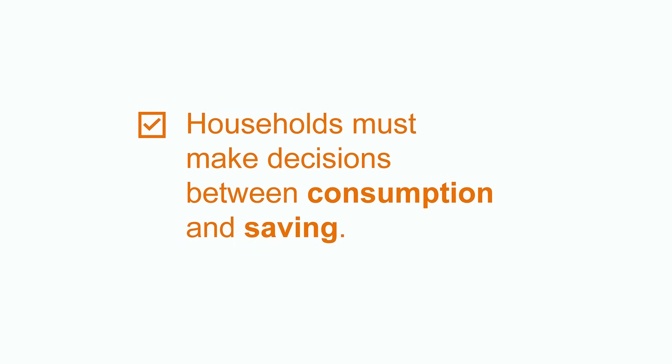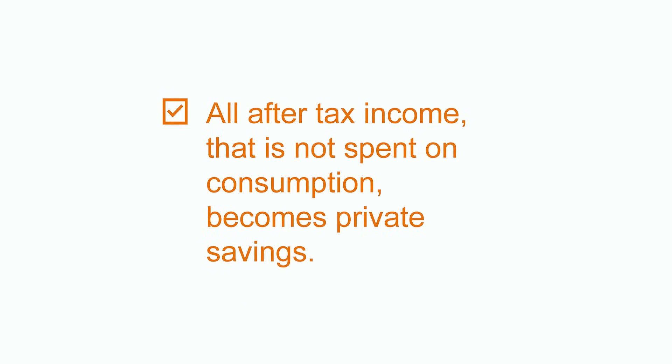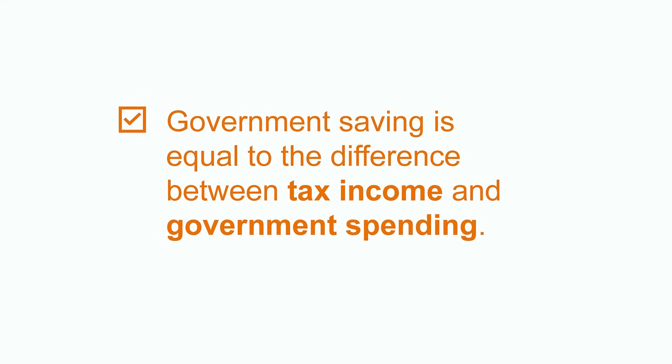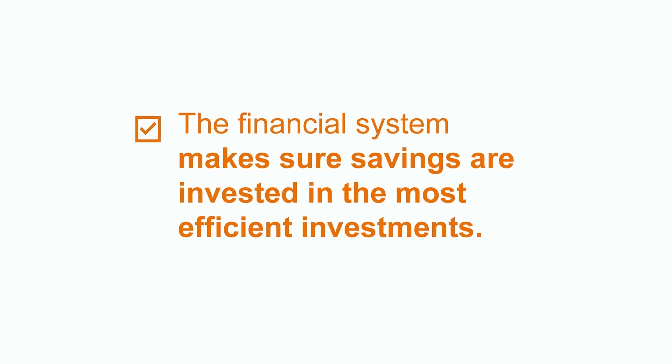Let's recap. Households make decisions between consumption and saving. All after-tax income which is not spent on consumption becomes private savings. Government savings are equal to the difference between tax income and government spending. The financial system makes sure savings are invested in the most efficient investments. The financial system is important because it helps allocate the economy's scarce resources in the most efficient way. Thanks for watching. Check out Chegg for more resources on macroeconomics.